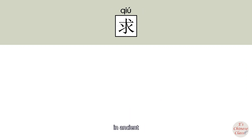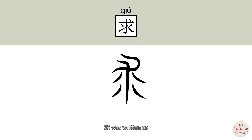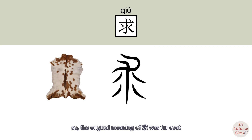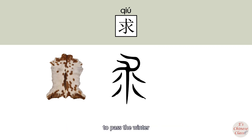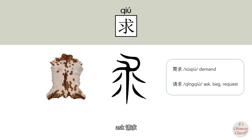In ancient Chinese, 求 was written as a character representing a fur coat. So the original meaning of 求 was fur coat. Fur coats were a basic demand for people to pass the winter. So the exact meanings are: demand (需求) and ask (请求).